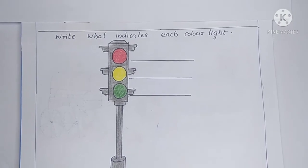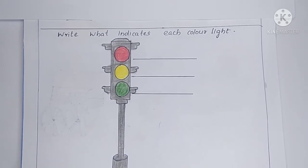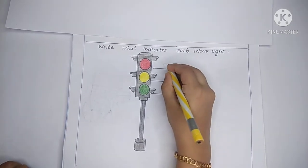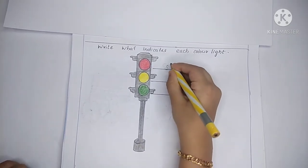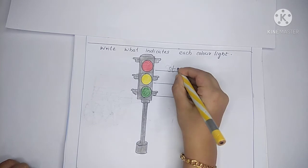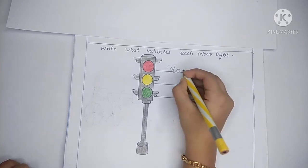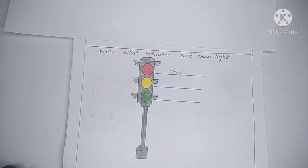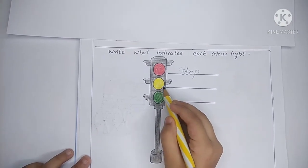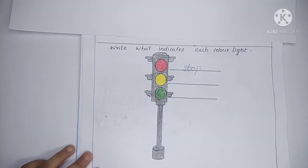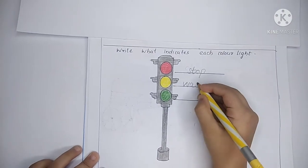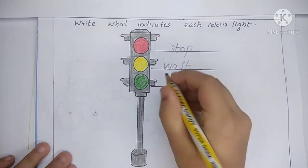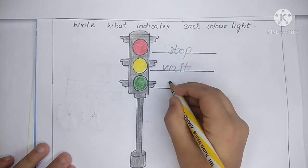Each color of the traffic light indicates: Red light — stop. Yellow light — wait. Green light — go.